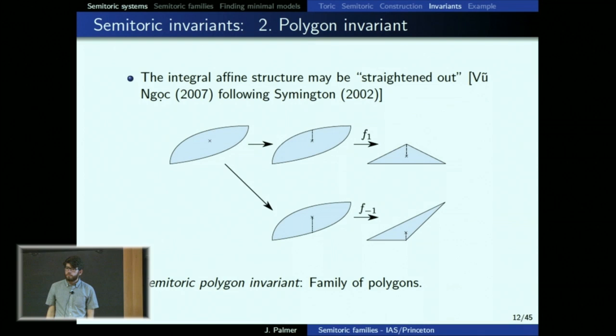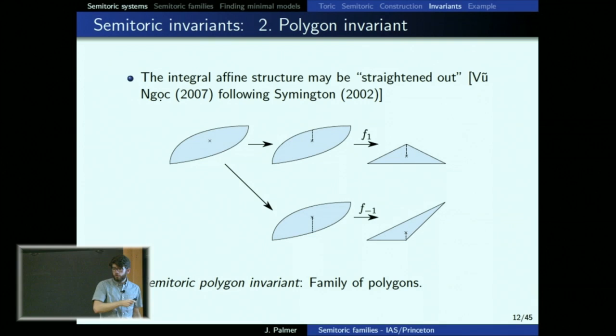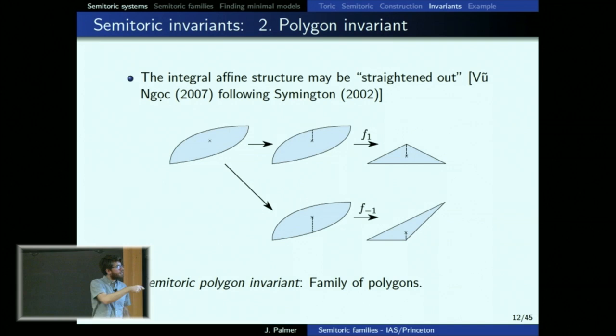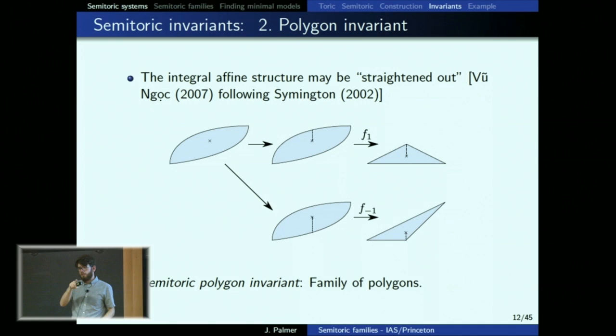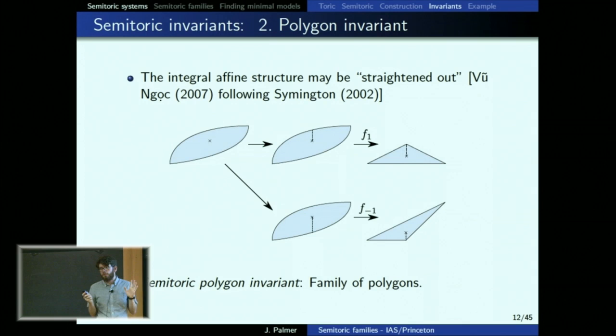[Question: How do I tell what admissible data is for the family of polygons?] The corners of the polygons that are not near a cut must be corners that can appear in the toric case, because away from the cuts, after straightening, everything is toric. At the cuts, the monodromy matrix of the focus-focus point is known — something like the matrix (1,1;0,1) — so the bend introduced at that point is due to that monodromy matrix. Something that goes from slope 1/2 to slope -1/2 on the top.